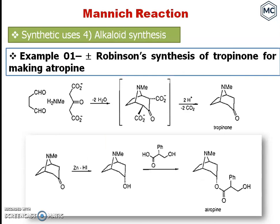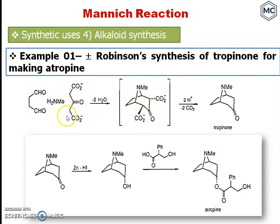This can also be used for alkaloid synthesis — for example, Robinson's synthesis of tropinone, used in making atropine. Starting with a compound that undergoes two Mannich reactions, a Mannich base is formed, then the ionizable pattern attacks to form an intermediate structure. On hydrolysis and decarboxylation, you get tropinone, and tropinone on reduction gives a compound that is then esterified to form atropine.